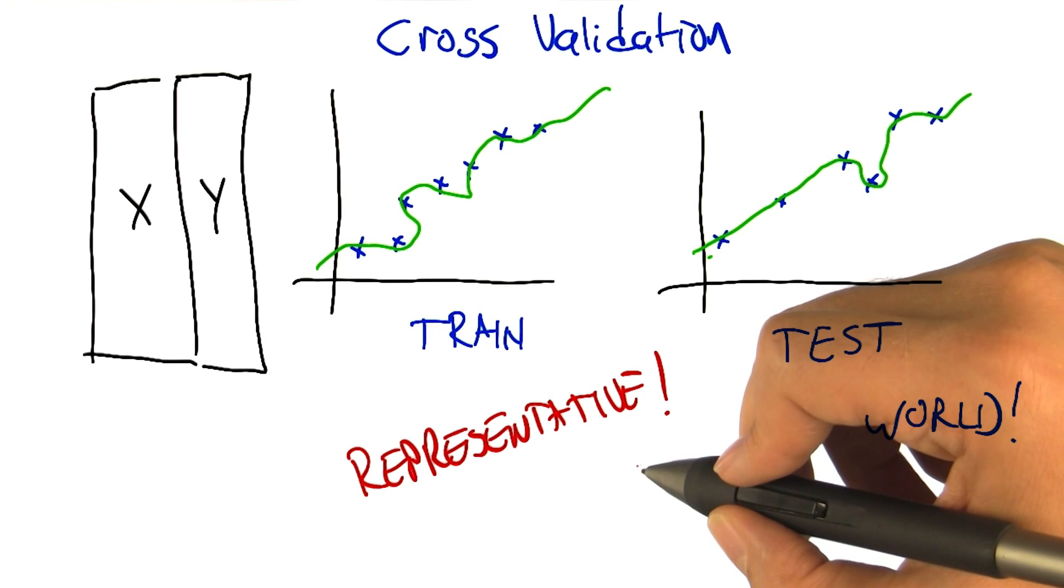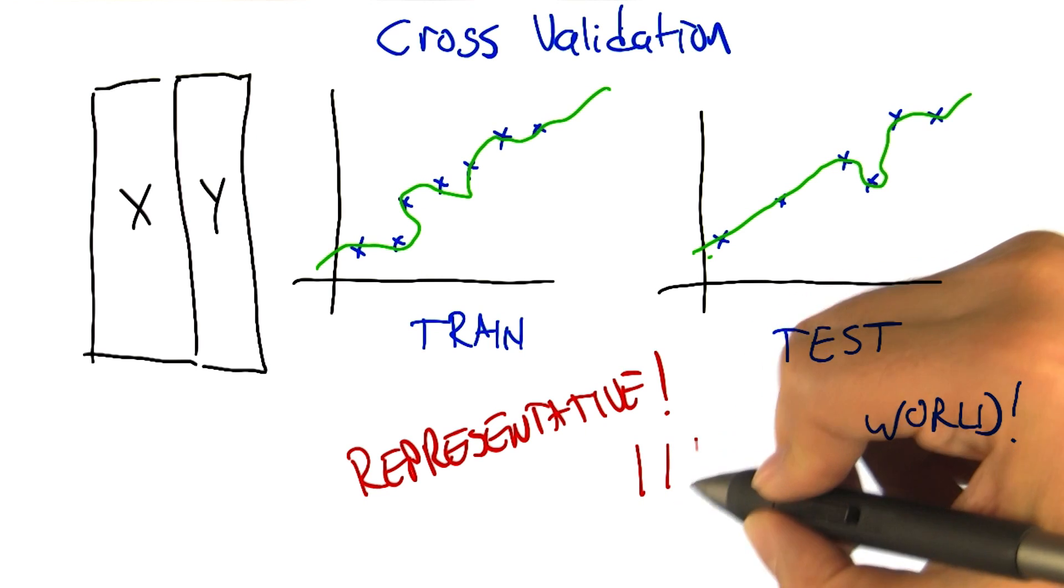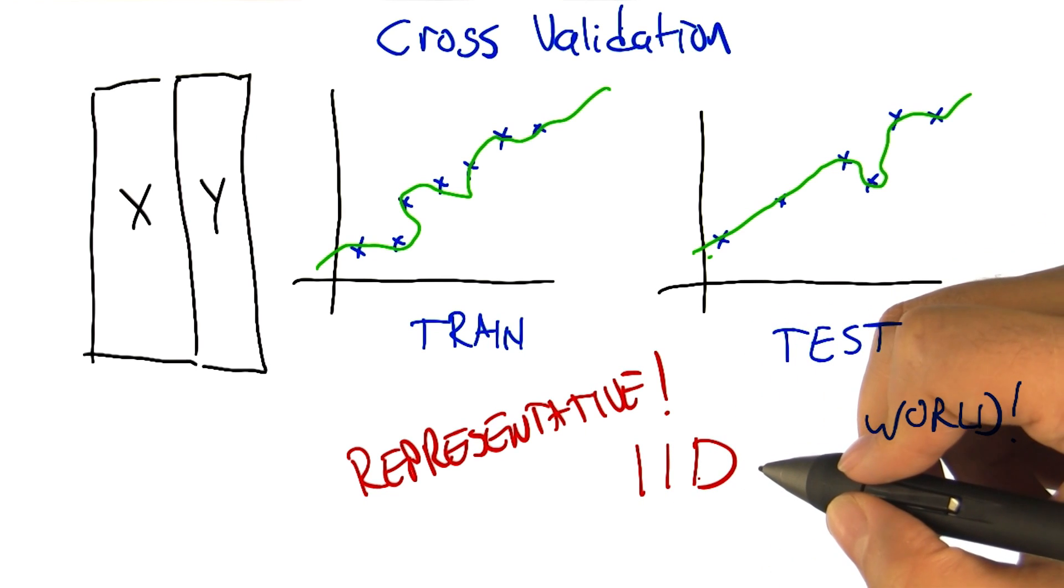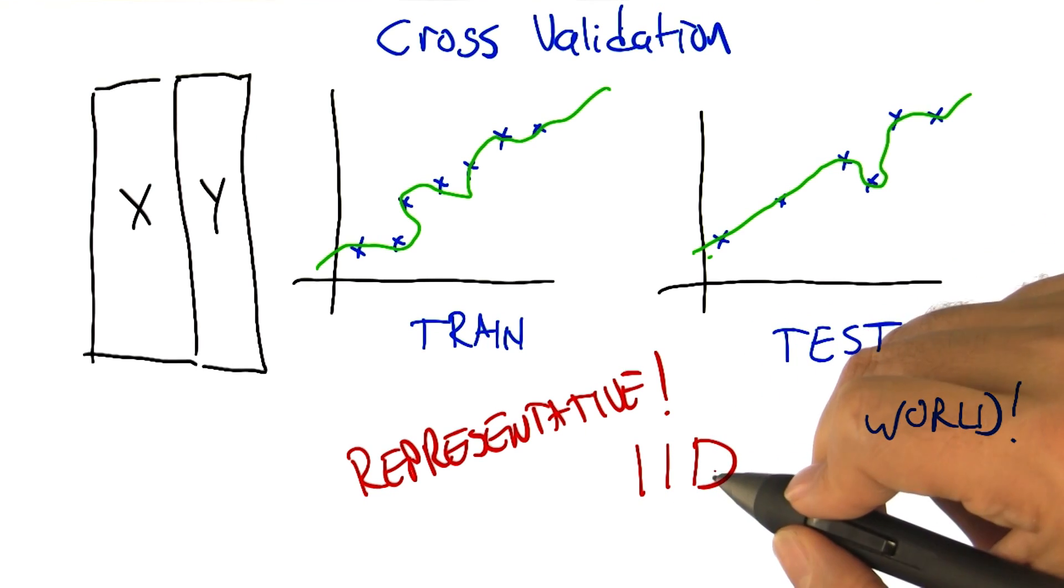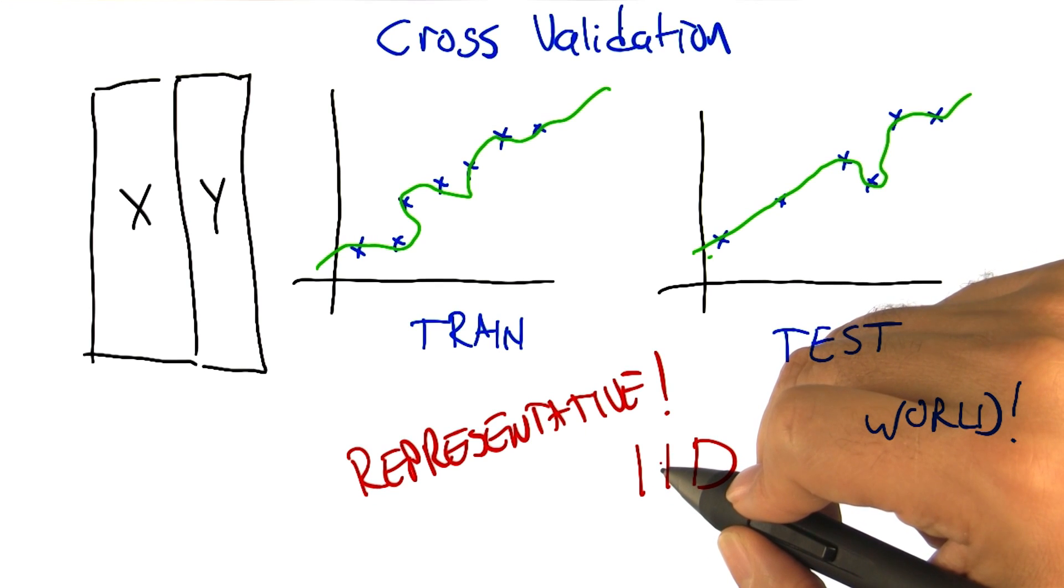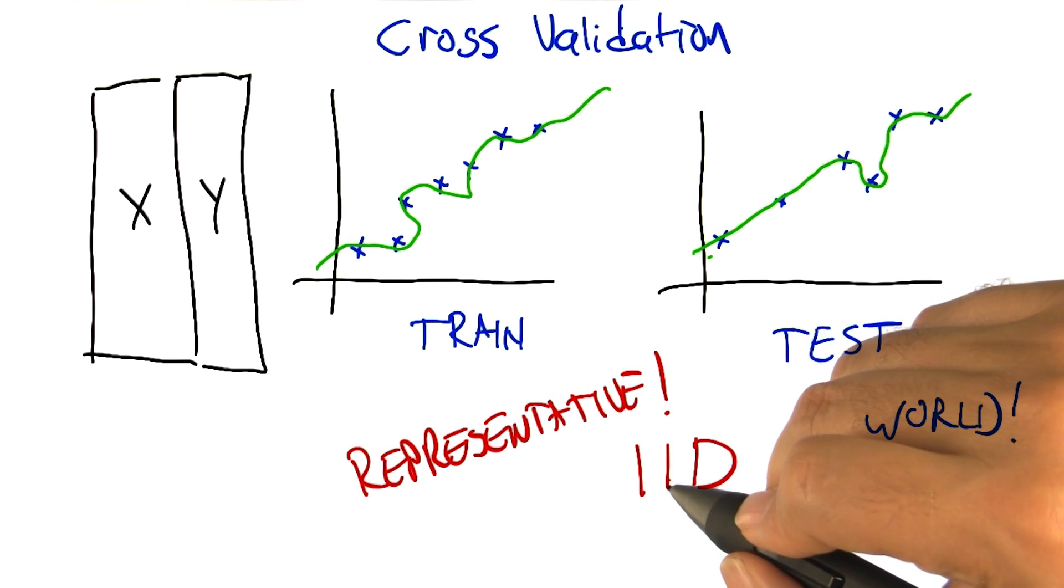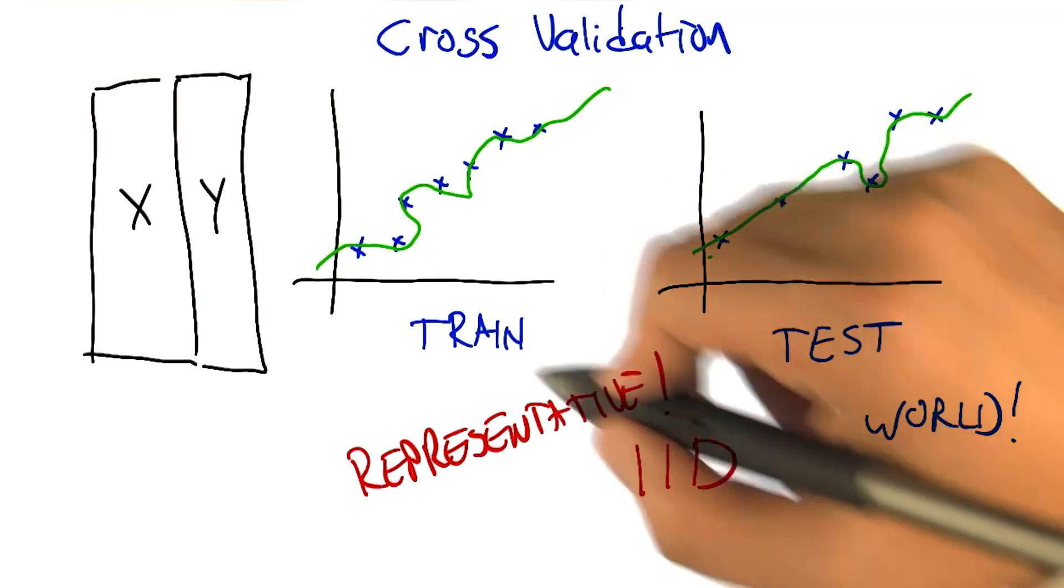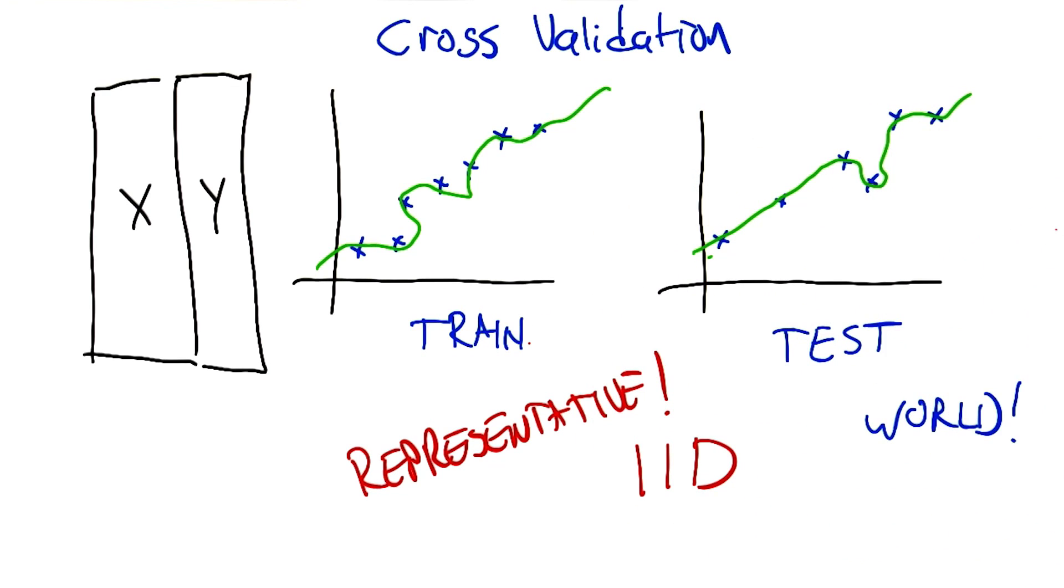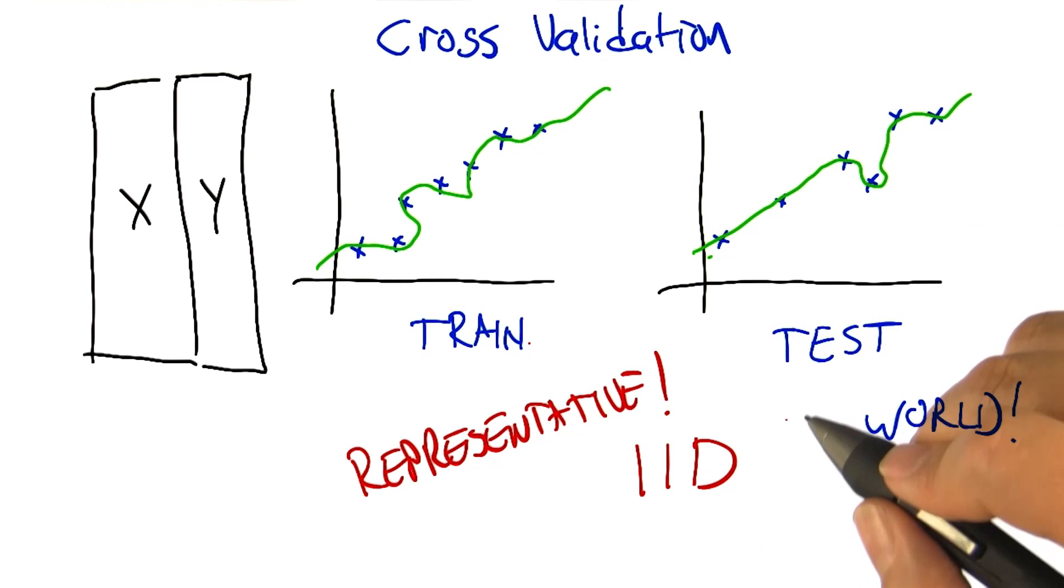In fact, there's an abbreviation that statisticians like to use, that the data - we really count on the data being independent and identically distributed, which is to say that all the data that we've collected, it's all really coming from the same source. And so there's no sort of weirdness that the training set looks different from the testing set, looks different from the world, but they're all drawn from the same distribution.